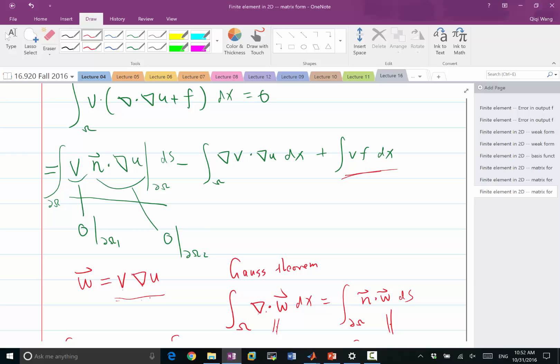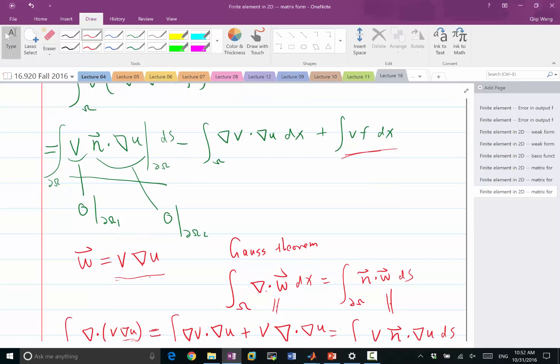We had Gauss quadrature, right? So we represented this, we approximated this as a summation of wi times v(xi) and f(xi). In two dimensions we can do exactly the same thing, but the Gauss quadrature points and weights are going to be adapted to the two dimensional form.